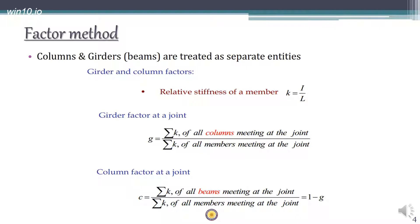In the Factor method, the columns and girders are treated as separate entities. We have to separate out all the columns and all the beams. The first thing we have to find out is the girder factors and column factors. To find these, it is important to list the relative stiffness of each member, which is k = i/L. Differences in moment of inertia and length of each member are accounted for using relative stiffness.